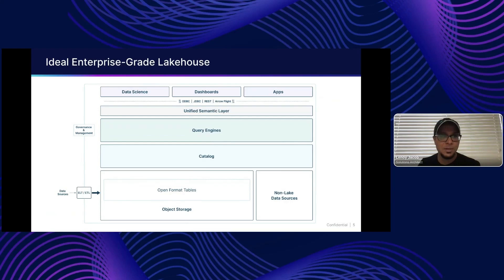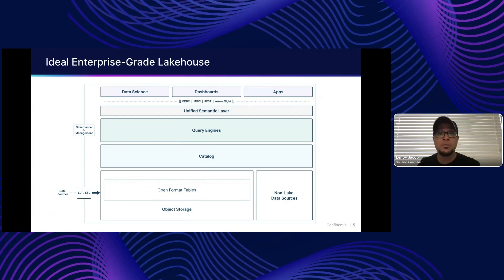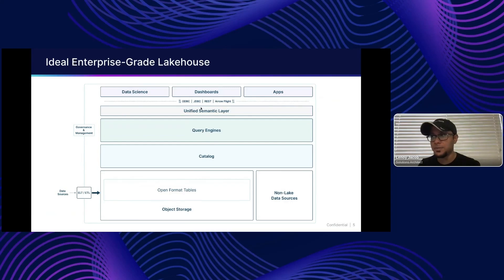You need a query engine to run queries, do transformations, and do all kinds of processing work on that data. For your end users, you want to deliver data in a way that is easy to understand, easy to find and discover, and well-governed — that's why you need a semantic layer. Traditionally the semantic layer has been part of BI tools, but it makes more sense to offload that semantic layer logic into your data lakehouse. This is a place where users can get a unified view of their data and bring it into different use cases — data science workloads, dashboards, or data applications — using standard interfaces like ODBC, JDBC, and REST APIs.